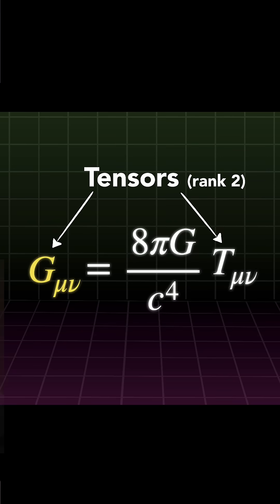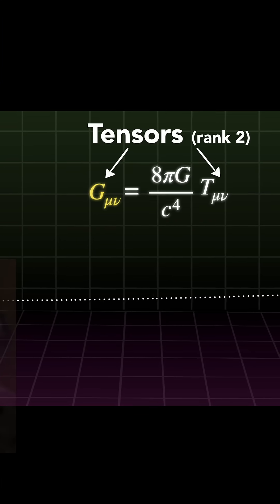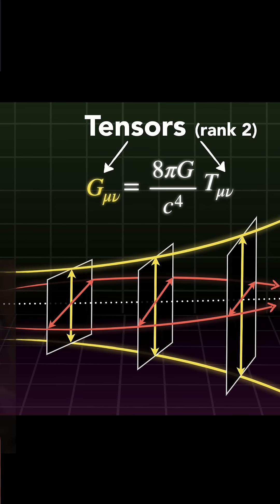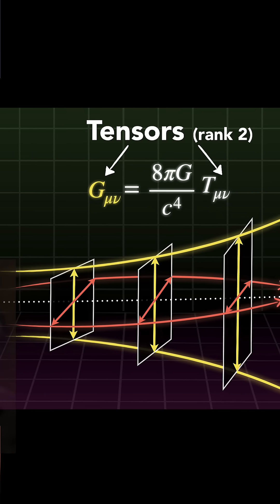we might even be able to intuitively understand why some of the most complex equations of physics, like the Einstein's field equations of general relativity, has to be written in the language of higher order tensors, not just vectors.